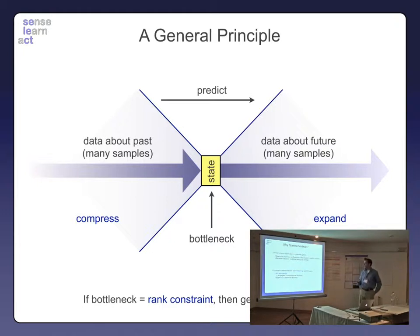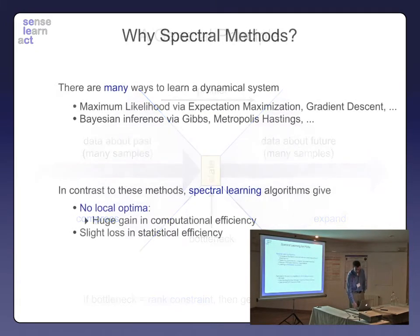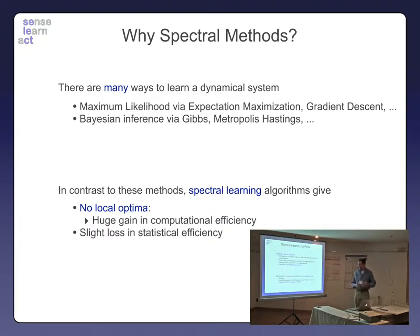There are many different ways of learning a dynamical system model. Why are spectral methods good? In contrast to many other methods you may be familiar with, like maximum likelihood or Bayesian inference, spectral learning algorithms have no local optima. This results in a huge gain in computational efficiency. We do have to pay for this with a slight loss of statistical efficiency, but in practice, the gain in computational efficiency makes the learning algorithm much better, in terms of learning a more accurate model.